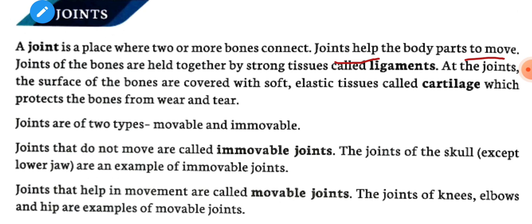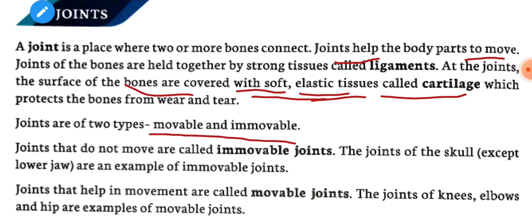Joints of the bones are held together by strong tissues called ligaments. At the joints, the surface of the bones are covered with soft elastic tissues called cartilage, which protects the bones from wear and tear. Joints are of two types: movable joints and immovable joints.